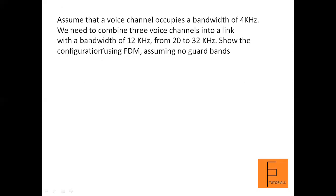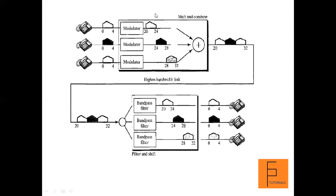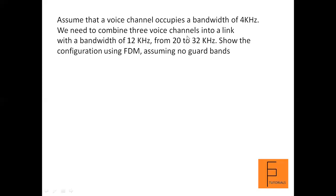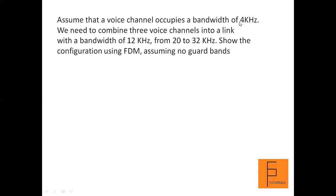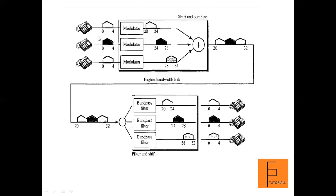I have three voice channels as mentioned. Each voice channel is represented by a telephone receiver in the diagram. Each telephone device is generating an analog voice signal. A voice channel occupies a bandwidth of 4 kHz, so each telephone signal has a bandwidth of 4 kHz with a range of 0 to 4. Each of these signals is then given to a modulator.